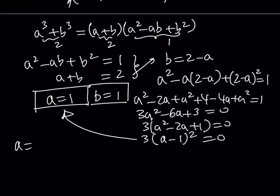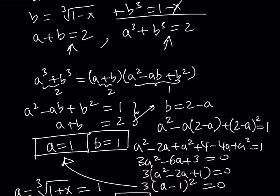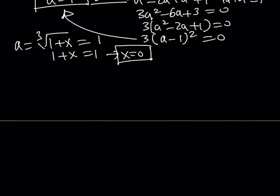So, A is equal to cube root of 1 plus X. And that is equal to 1. From here, if you cube both sides, you get 1 plus X equals 1. And X equals 0 as before. Obviously, we should be getting the same answer. Even though we use different methods, we should always arrive at the same answer.